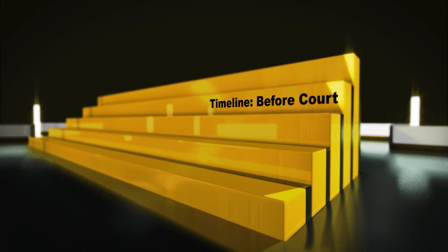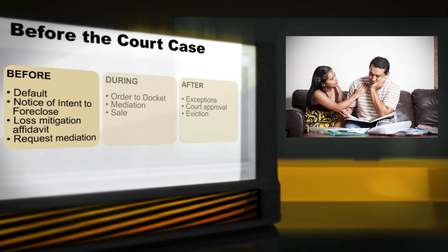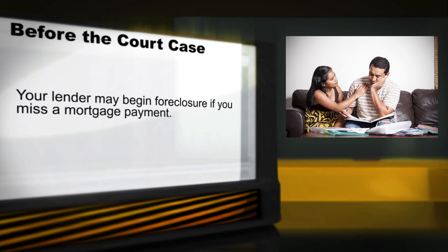Now that you're familiar with some terms, let's go over a typical timeline for a foreclosure case. First, we'll go over the events that happen before the lender begins the foreclosure process in court. Your lender may begin the foreclosure process if you default on the loan. When you miss a payment and fall behind on the mortgage, you are in default. This can happen even if you are just one day late paying your mortgage. You can usually fix a default by paying the lender what you owe. You may also have to pay interest and fees.